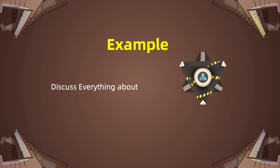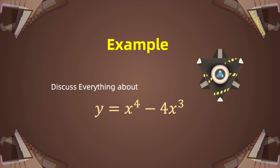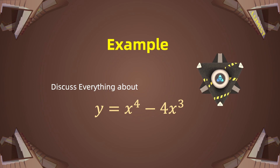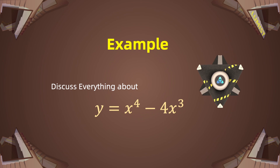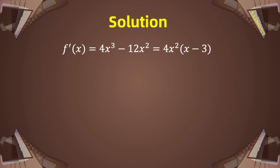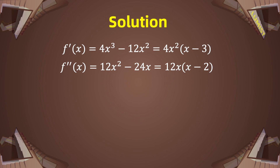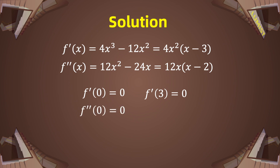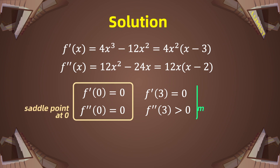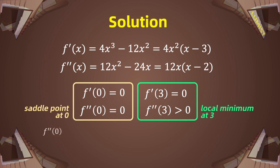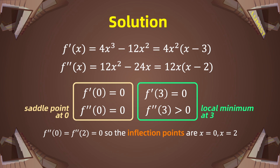Here is an example. Let us discuss the curve y equals x to the power of 4 minus 4x cubed with respect to concavity, points of inflection, and local maxima and minima. We find the first derivative to be 4x² times (x minus 3), and the second derivative is 12x times (x minus 2). From the first derivative, the critical points are x equals 0 and x equals 3. The second derivative at 0 equals 0, and the second derivative at 3 is greater than 0, so the function has a saddle point at 0 and a local minimum at 3. Also, f''(0) and f''(2) both equal 0, so there are points of inflection at x equals 0 and x equals 2.